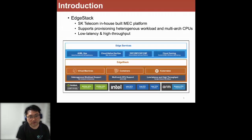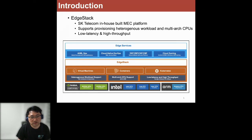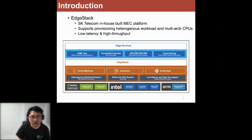For the last year, we already introduced our in-house built MEC platform called Agistack. Agistack is based on Kubernetes, and we added the KubeVirt add-on for spawning VMs as well as managed Kubernetes. The aim of Agistack is to support various workloads including VMs, containers, and Kubernetes, targeting multi-architecture CPUs like Intel and ARM. Since this is a MEC platform, we are pushing for low latency as well as high throughput.